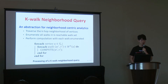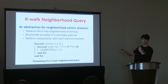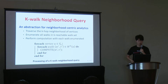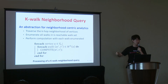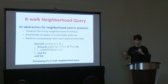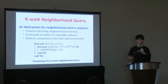I can now introduce an abstraction for neighborhood-centric analytics called the k-walk neighborhood query. It traverses the k-hop neighborhood of each vertex, enumerates all walks in the k-reachable walk set, and performs computation with each enumerated walk. For each vertex, we execute the user-defined compute function with each walk. The problem to solve is how we can enumerate all walks of length k with a given memory budget, since memory is never infinite.